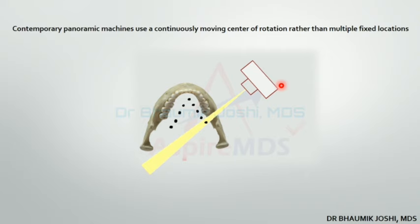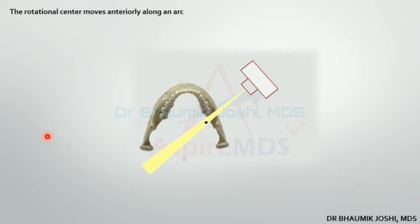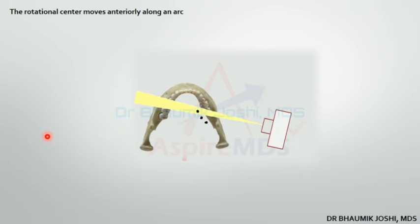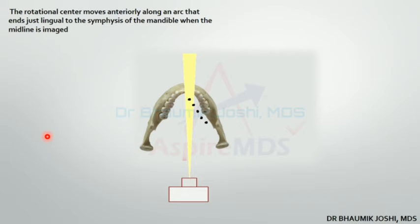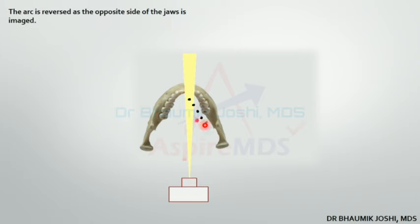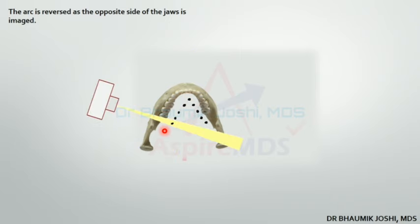With multiple centers of rotation, the rotation center moves anteriorly along the arc. Starting from one side, the x-ray source moves anteriorly, ending just lingual to the symphysis at the midline. Then the arc is reversed and the other side of the jaw is imaged posteriorly. All these rotations together allow the full panoramic image to be captured, with the image forming progressively as the x-ray source moves along the mandible.